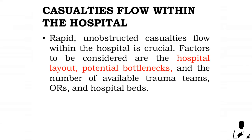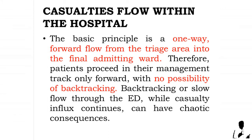Casualties flow within the hospital must be rapid and unobstructed, as this is crucial. Factors to be considered include the hospital layout, potential bottlenecks, and the number of available trauma teams, operating rooms, and hospital beds. The basic principle is a one-way forward flow from the triage area into the final admitting ward. Patients proceed only forward in their management track with no backtracking, as backtracking or slow flow through the emergency department can have chaotic consequences.